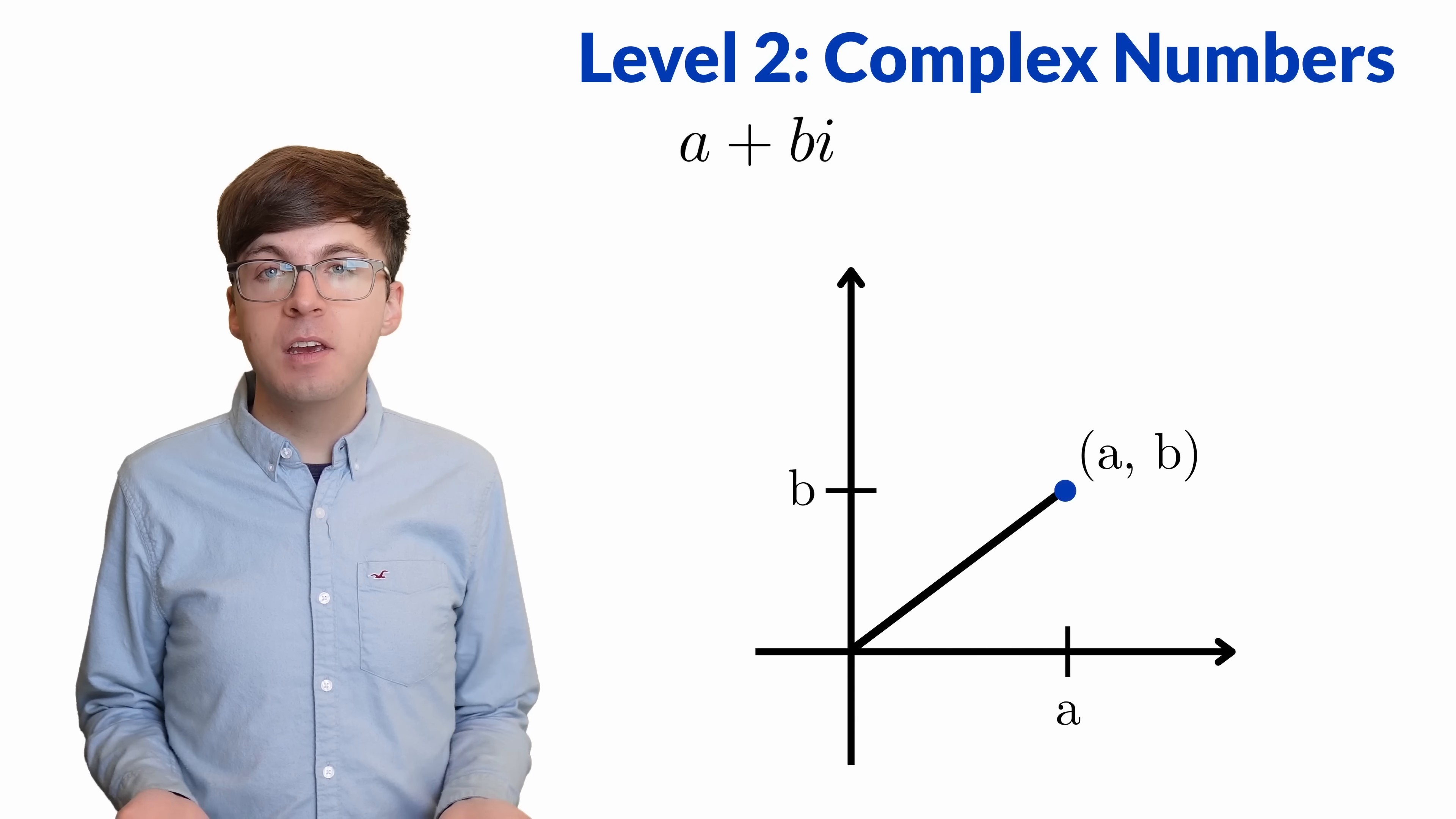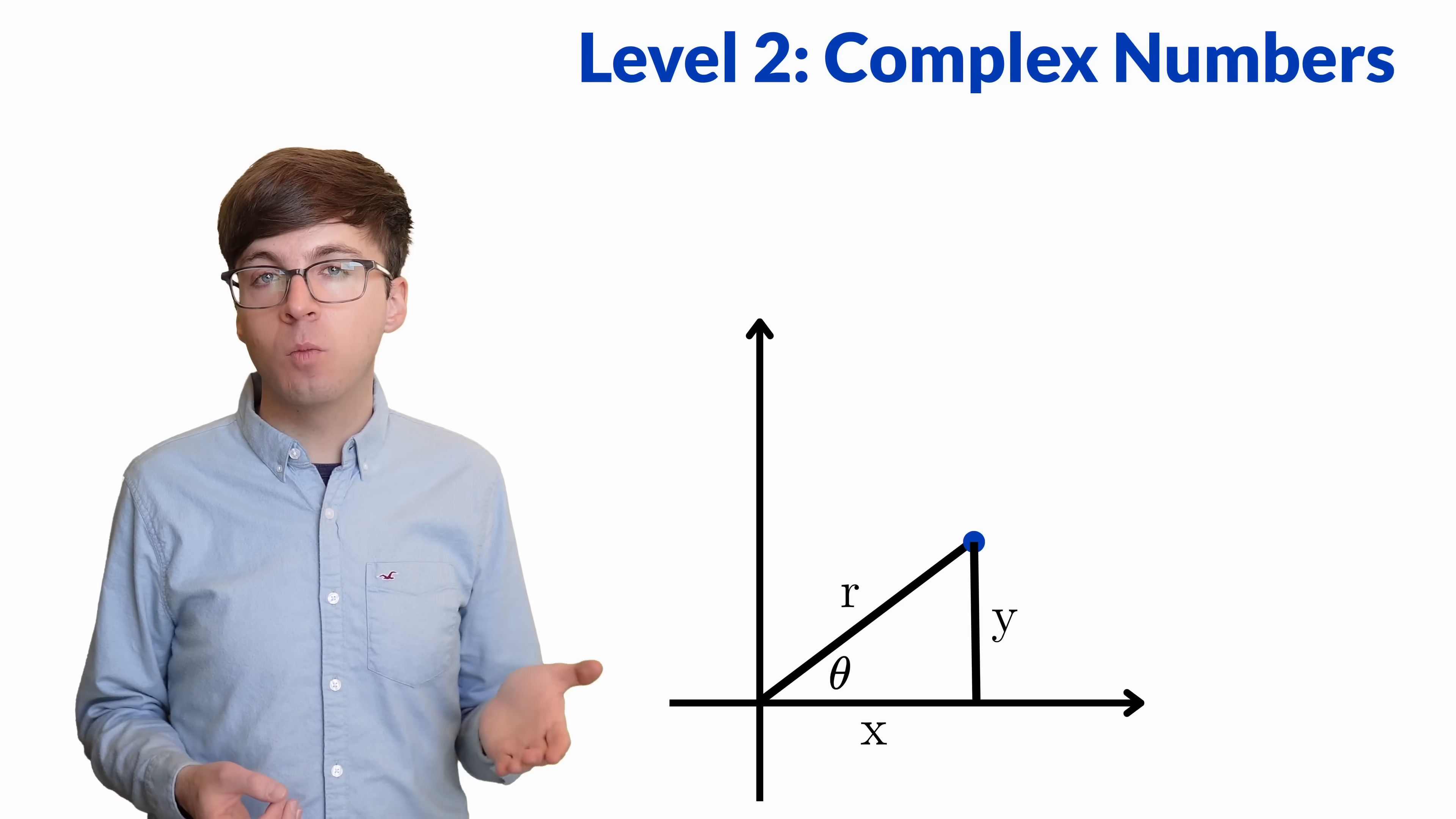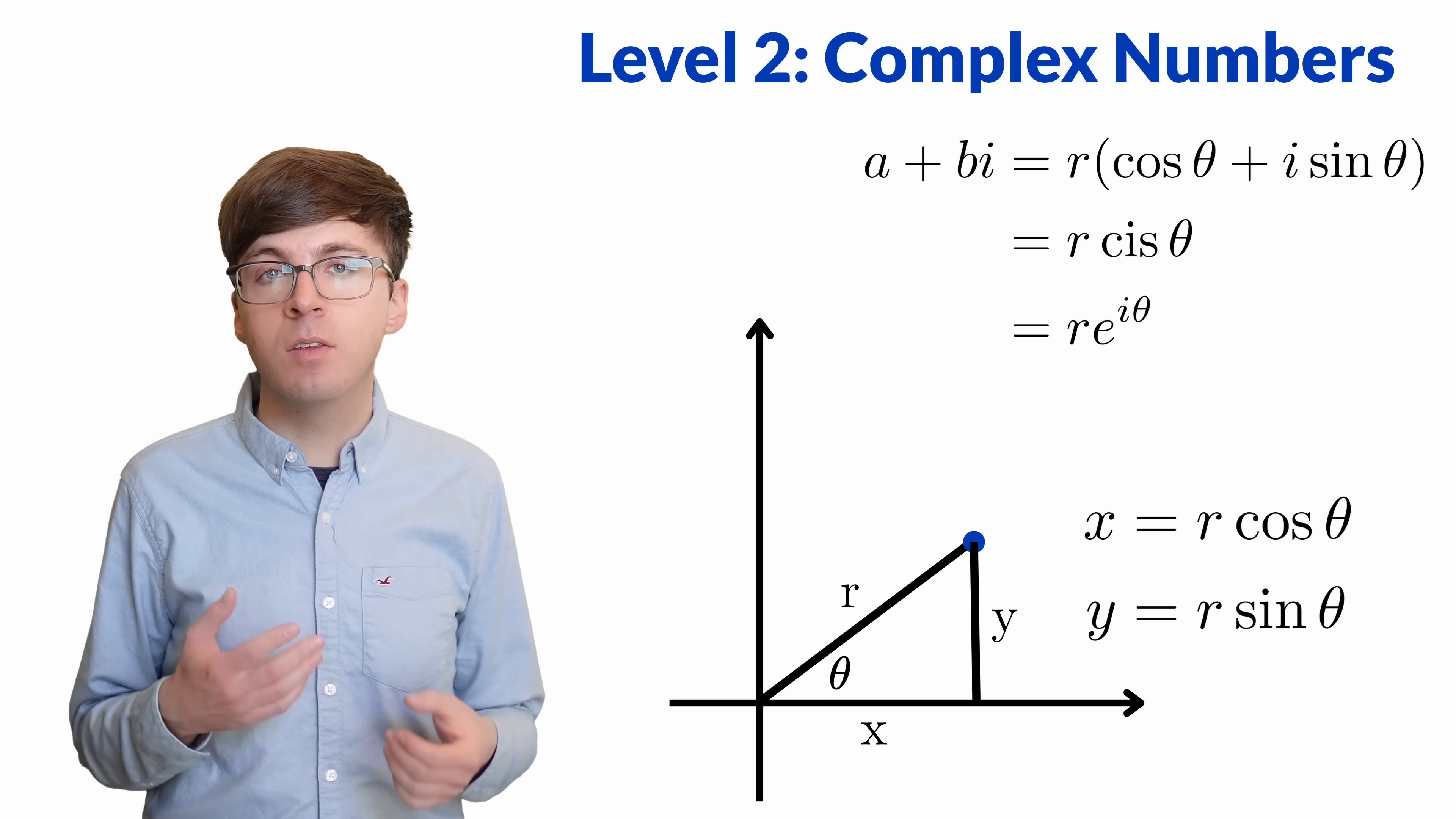So we can graph these. Usually we put the real part on the horizontal axis and the imaginary part on the vertical axis. The complex number a plus bi corresponds to the point ab in the complex plane. But the rule for multiplication actually works better if we use different coordinates to represent this point. Instead of using rectangular coordinates, x and y, we can use polar coordinates. If we draw this triangle, the rectangular coordinates are the x and y, and the polar coordinates are the hypotenuse r and the angle theta. If we know a little trigonometry, then we can find formulas for x and y in terms of r and theta. Then we can write a plus bi as r times cosine theta plus i sine theta. That's kind of a mouthful, so we can abbreviate this as r cis theta, or use Euler's formula to write it as r e to the i theta. In physics, you might see it like this.